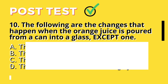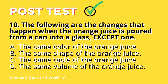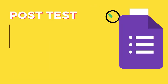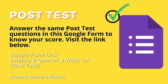Question 10: The following are the changes that happen when orange juice is poured from a can into a glass, except: A. The same color of the orange juice. B. The same shape of the orange juice. C. The same taste of the orange juice. D. The same volume of the orange juice. Answer the same post-test questions in this Google form to know your score. Kindly visit the link below.